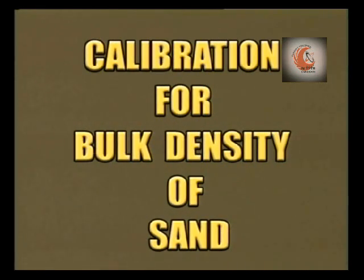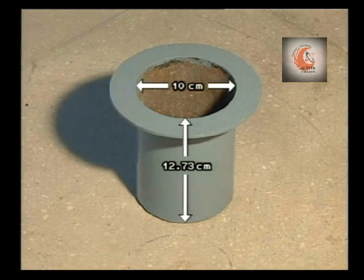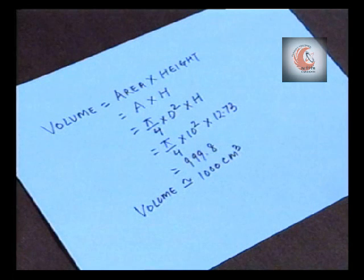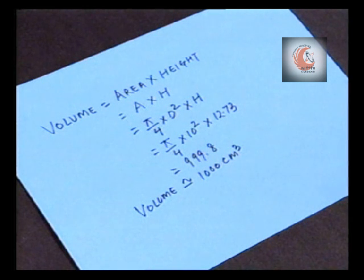To start with the practical, first of all we shall determine the bulk density of the sand. For this purpose, we shall determine the volume of the calibrating container. Volume is equal to area into height, that is A into H, where area is equal to pi by 4 into D squared.